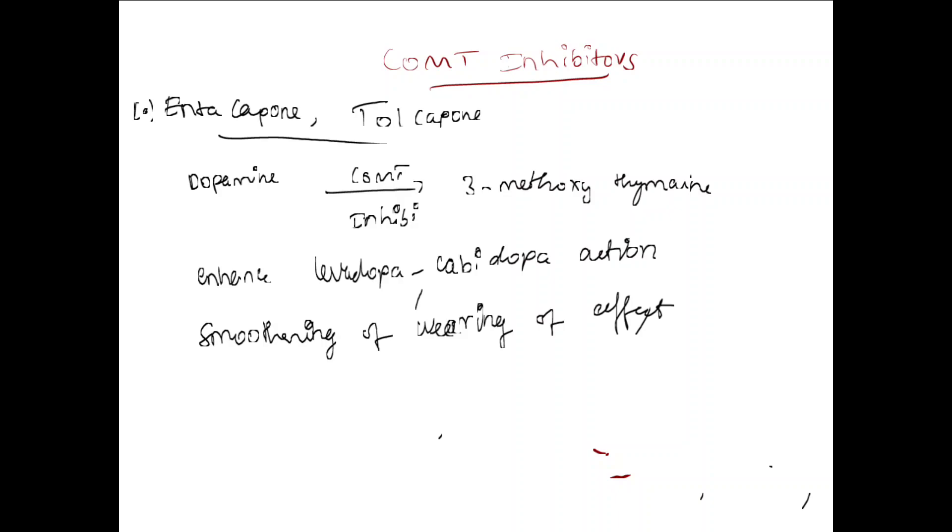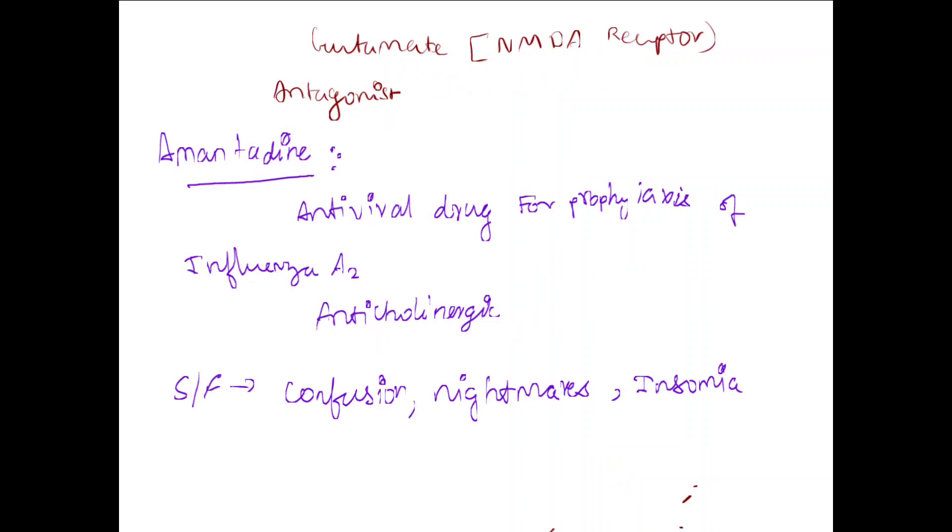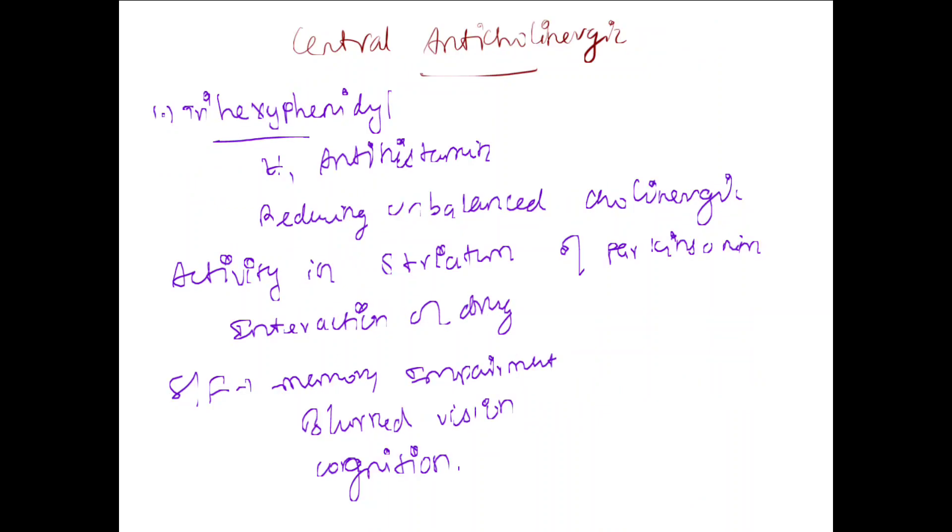COMT inhibitors form 3-methoxytyrosine. Amantadine is an antiviral drug for prophylaxis of influenza A2. It has anticholinergic side effects including confusion, nightmares, and insomnia.